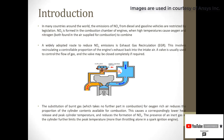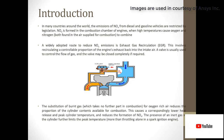In EGR, in many countries the emissions of NOx from diesel and gasoline vehicles are restricted by legislation. NOx is formed in the combustion chamber when high temperatures cause oxygen and nitrogen to react. To reduce NOx emissions, exhaust gas is recirculated so that the oxygen sent to the cylinder is reduced, lowering NOx formation. The widely adopted route to reduce NOx emissions is exhaust gas recirculation.